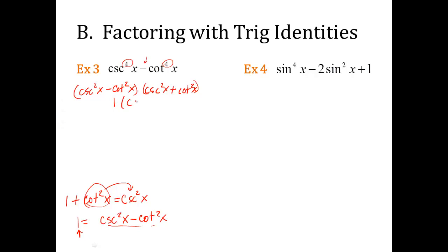So I can replace that mess with a simple one. So it's one times the cosecant squared of x plus the cotangent squared of x. Now, back to this identity, there's nothing I can do to rearrange it so it looks like this, cosecant squared plus cotangent squared. It's not going to work. So that's just going to be my final answer. There's nothing more I can do to simplify this guy.